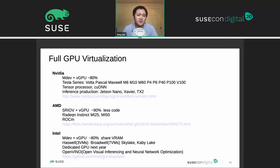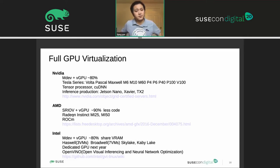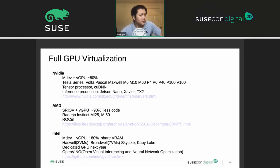Intel doesn't have dedicated GPU memory — it needs to share with the physical memory. Rumor says they'll have a GPU this year, though the current situation may push it to next year. But we're looking forward to it. All these different vendors have quite a stable market on their side.